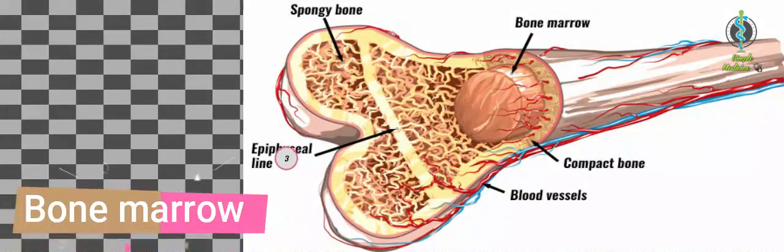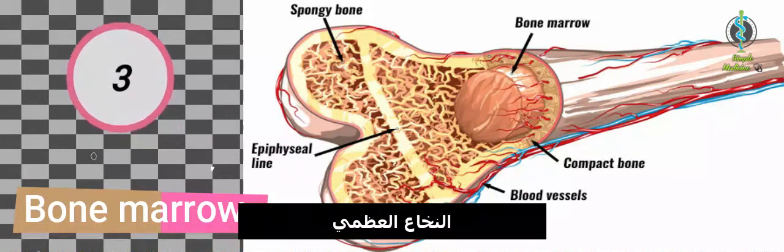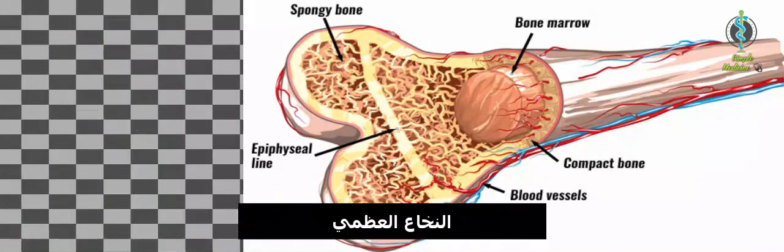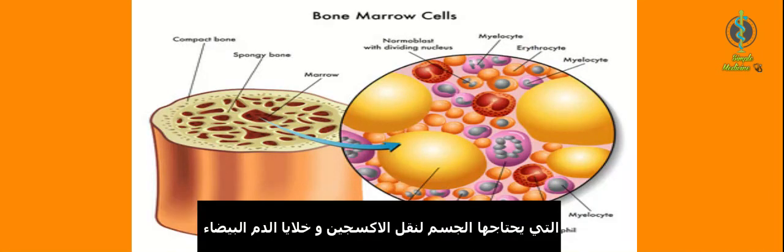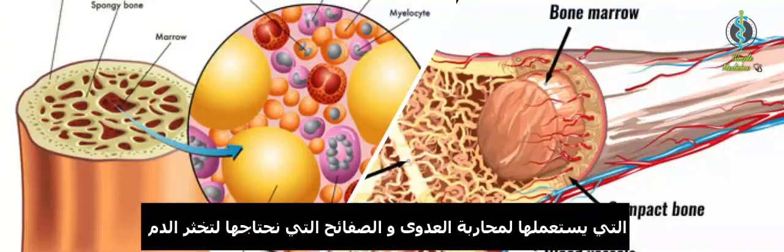Bone marrow. Bone marrow is the spongy tissue found inside your bones. It produces the red blood cells our bodies need to carry oxygen, the white blood cells we use to fight infection, and the platelets we need to help our blood clot.